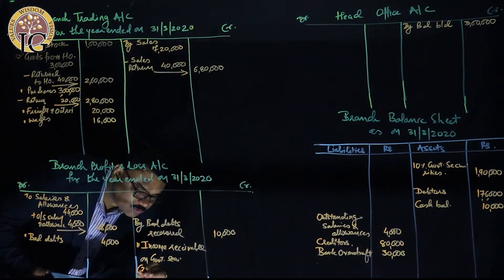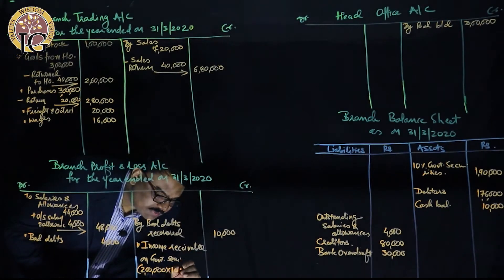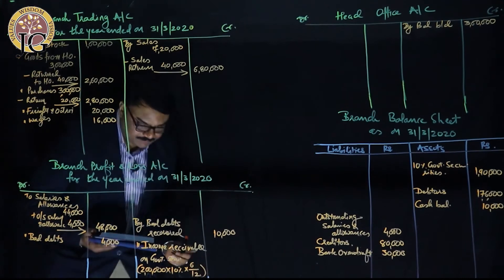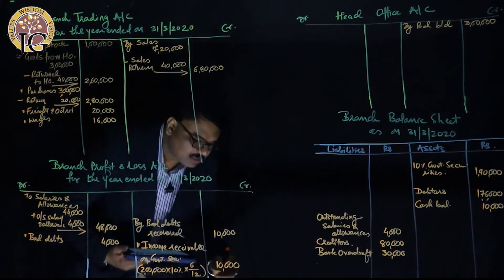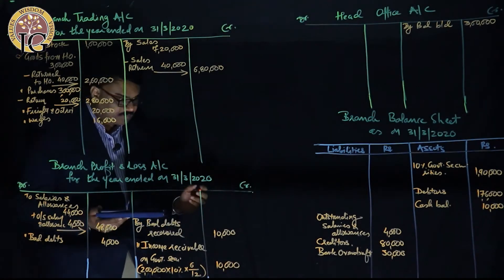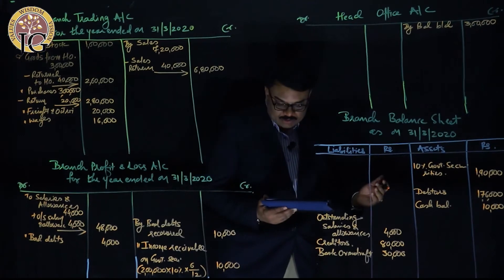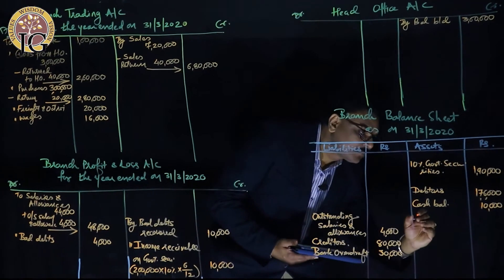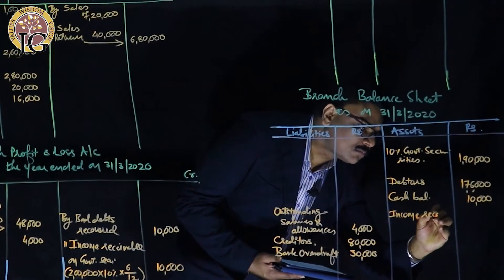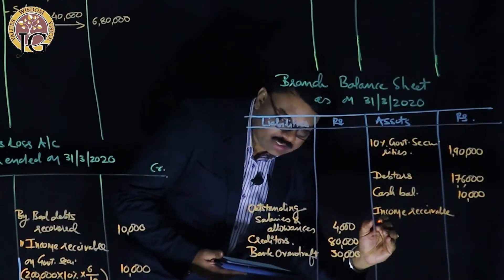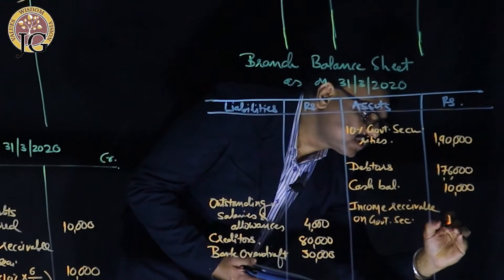The income receivable of ₹10,000 is credited to the profit and loss account as income. At the same time, it is also an asset — income receivable on government securities — so it is recorded on the asset side of the balance sheet at ₹10,000.